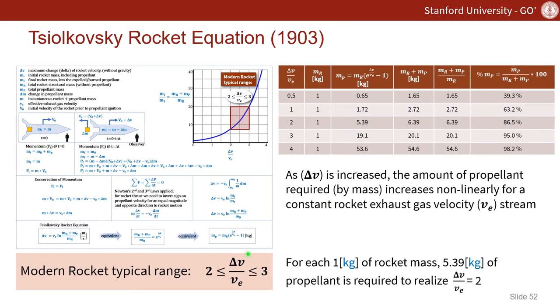The major insight for the Tsiolkovsky rocket equation is shown here, and it's really when we break down this delta V over VE in that 2 to 3 range. If we look at the bounding box on this graph between 2 and 3 on the horizontal axis, that's telling us that the change in rocket velocity has to be between 2 and 3 times the propellant exhaust exit velocity.